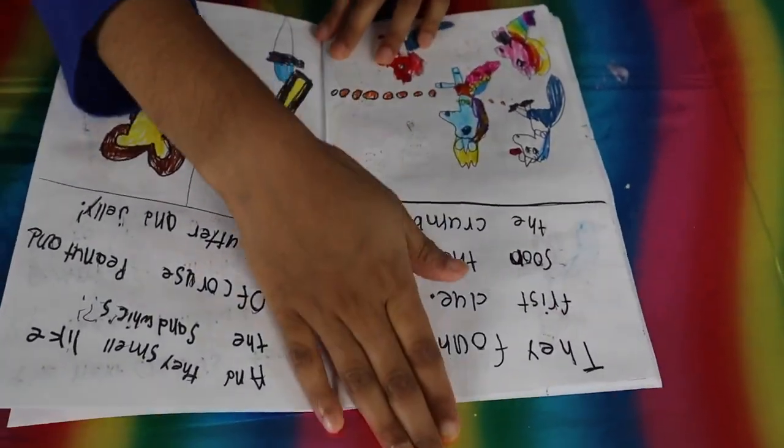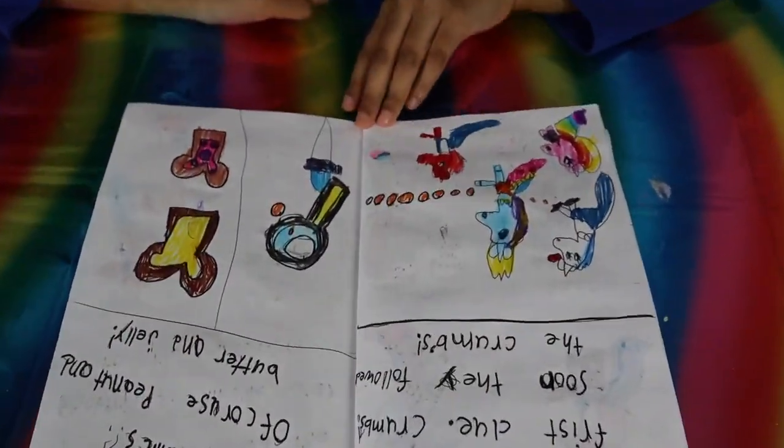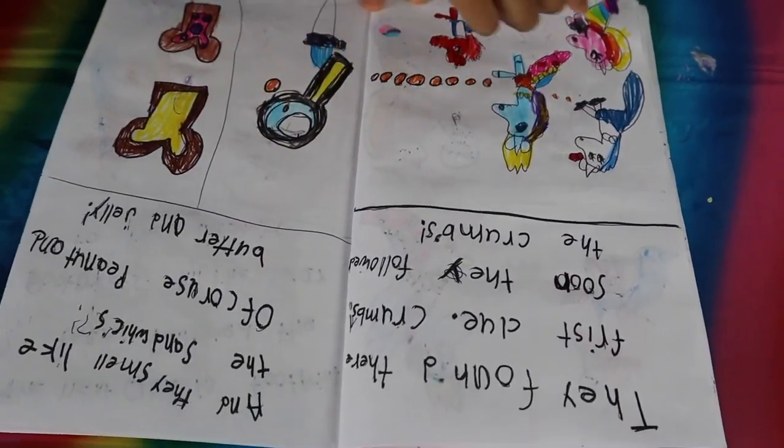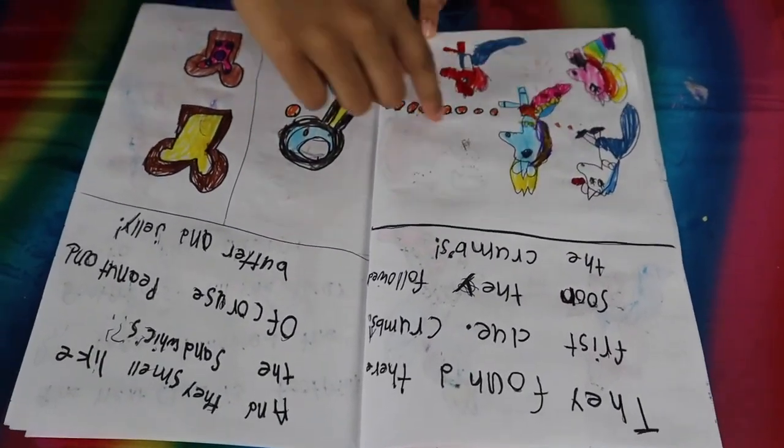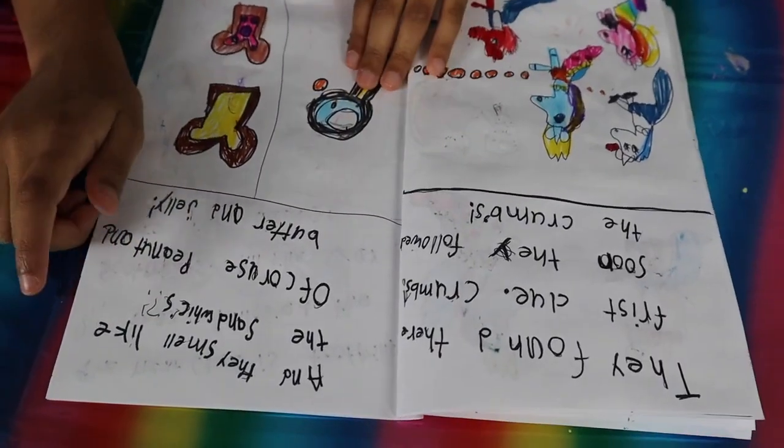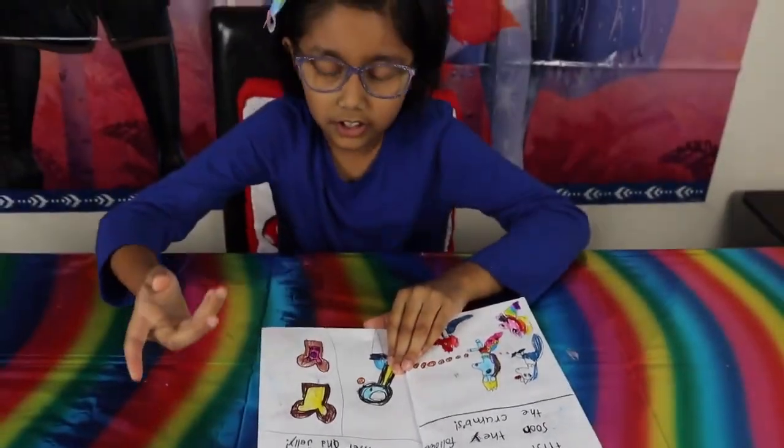They found their first clue. Crumbs. Soon, they fall over crumbs. See? There is everyone satisfied when they saw those crumbs. And they smell like the sandwiches? Of course. Peanut butter and jelly.